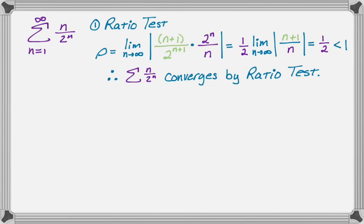That was pretty quick. Now I'm going to look at it and say: I see two to the n, and sometimes when you see something to the nth power, it's a good idea to use the root test. So I'm going to try that. Using the root test, we calculate rho again — in this case, rho is the limit as n approaches infinity of the nth root of the absolute value of the nth term.